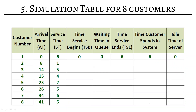For customer 2, arrival time is 8. The cashier was free at minute 6, so service can begin immediately at 8. Waiting time is 0. Service lasts 1 minute, so time service ends at 9. Time customer spent in system is 1 minute. The cashier was idle between minutes 6 and 8, so idle time is 2 minutes.